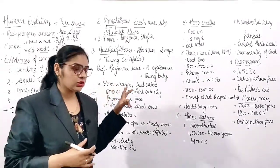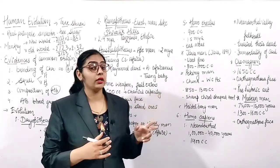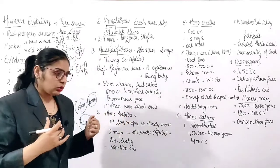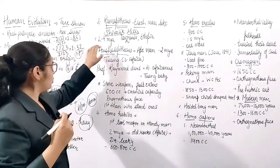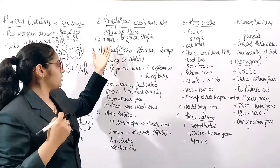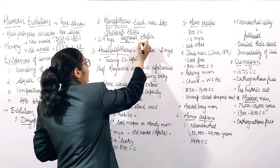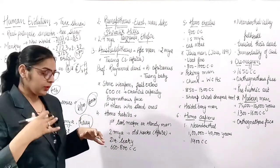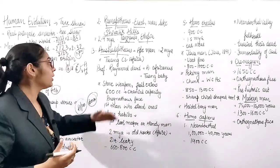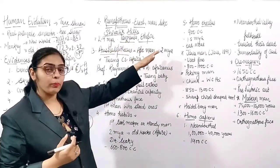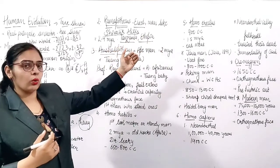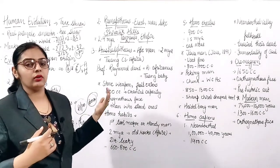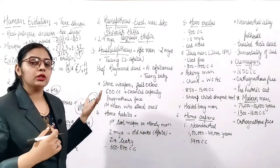As per NCERT, both Dryopithecus and Ramapithecus are around 15 million years old. However, some fossils of Ramapithecus were found in Tanzania and Ethiopia, dating to around 3 to 4 million years ago - this creates a somewhat contradictory statement. If asked about the common ancestor, Dryopithecus is the oldest and first ancestor. If asked which was more man-like and stood straighter, that was Ramapithecus.